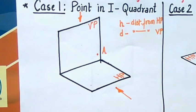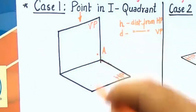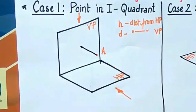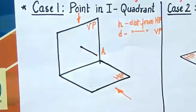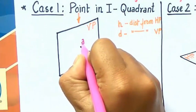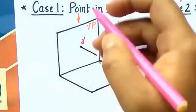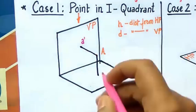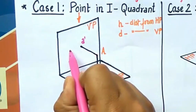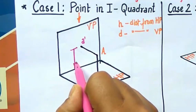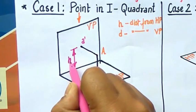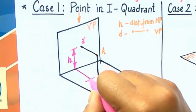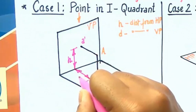When you look at this point right from the front, you're going to have a view — that is your front view — and it's going to intersect the vertical plane somewhere here. This projector is going to intersect the horizontal plane somewhere here, and this is what you call simply A. This distance here is what you call distance H, since it is lying above the horizontal plane. And this distance here is what you call distance D, that is in front of the vertical plane.